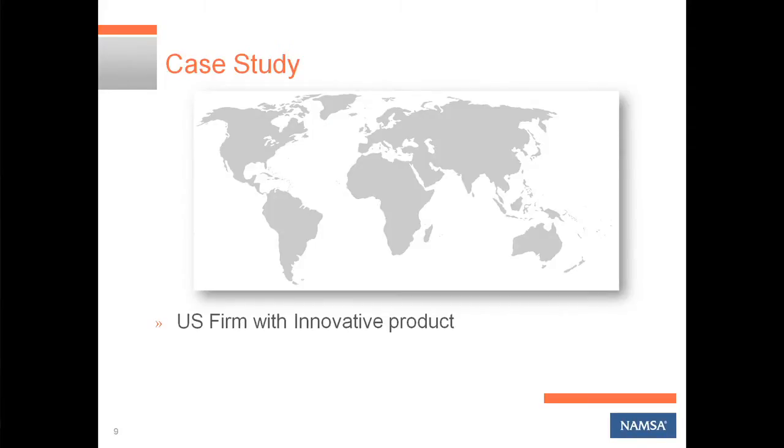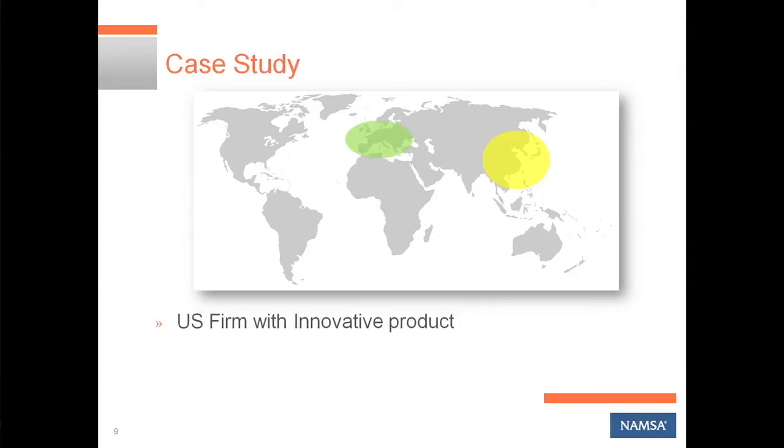A case study that TUV presented: the company that wants to get into Europe first — that's been the traditional model. Go to Europe first, it's faster, it's an easier pathway. But as soon as you get European approval, you're going to start getting emails from distributors all over the world wanting to sell your product. Unless you meet that home country approval requirement, you can't do anything. China is literally changing the rules June 1st — their definition of legal manufacturer is changing — so some of those old workarounds are not going to work.